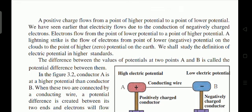The difference between the values of the potential at two points A and B is called the potential difference between them. The potential difference tells us the difference in potential values between point A and point B.